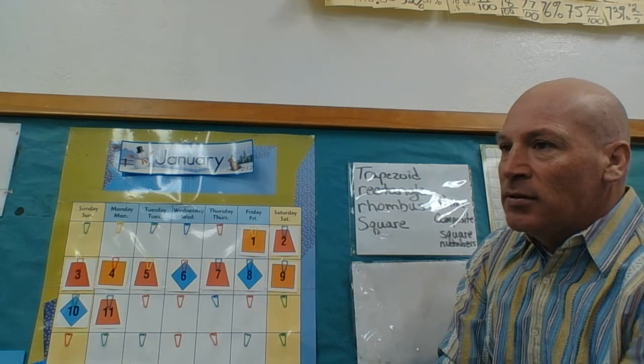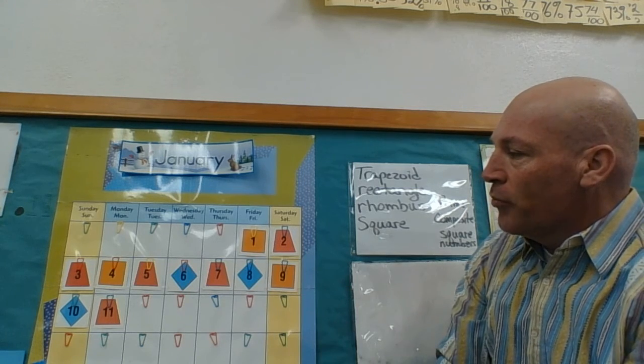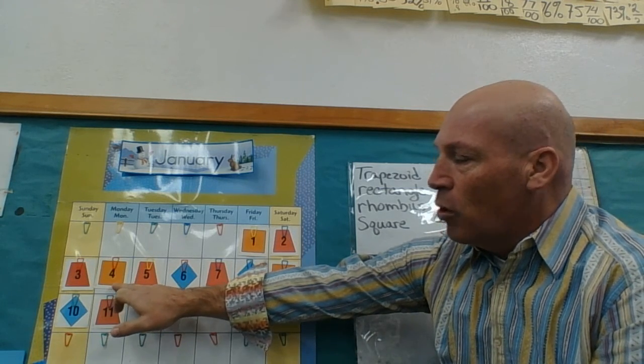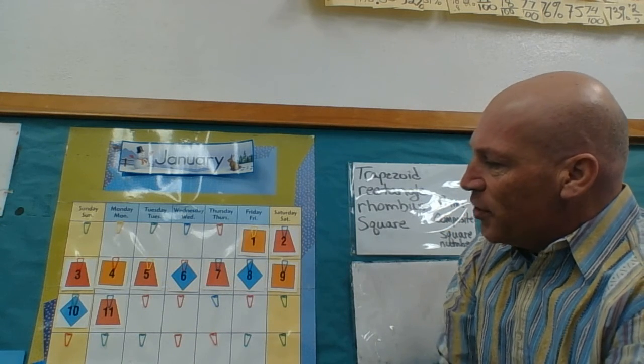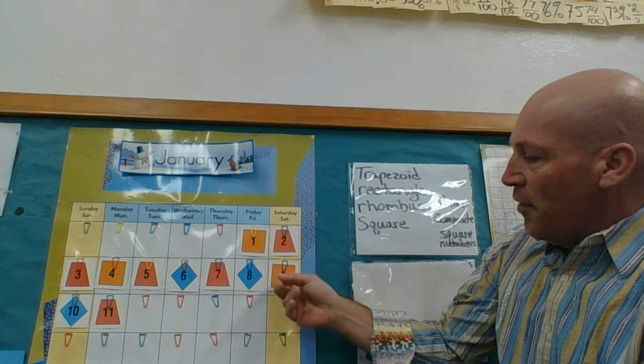What's one times one, or one squared? That would be one. What's two times two, or two squared? That would be four. What's three times three, or three squared? That would be nine.